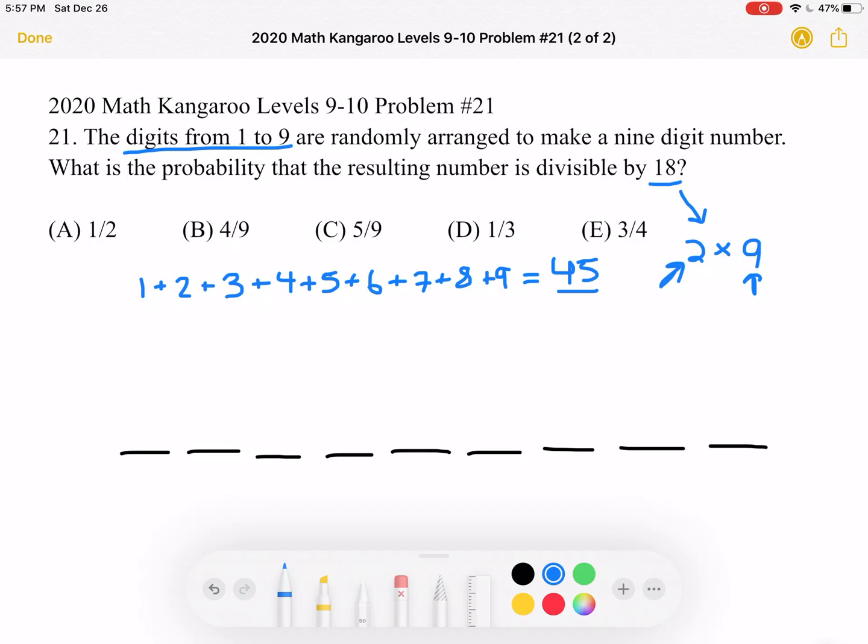If the number is divisible by 2, then the last digit must be even.